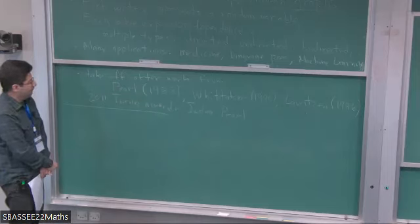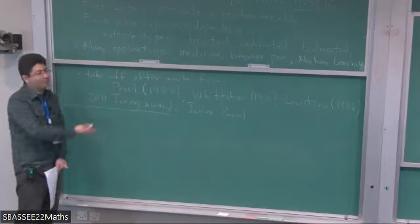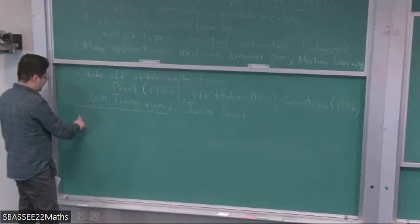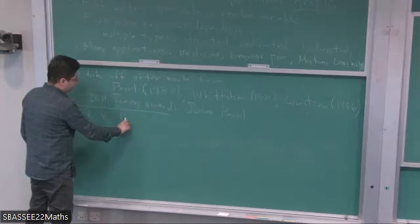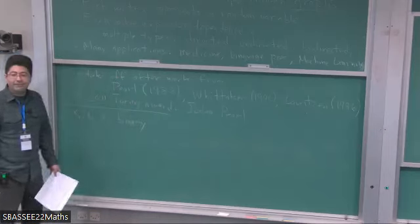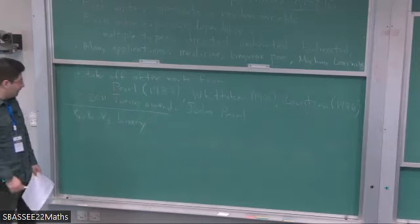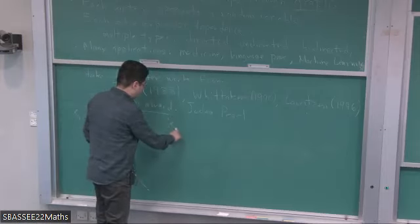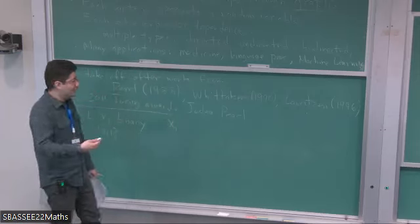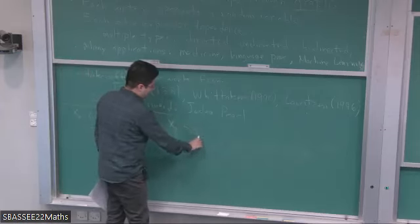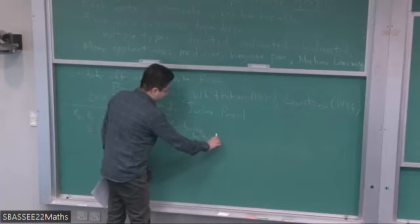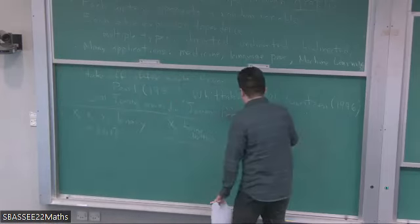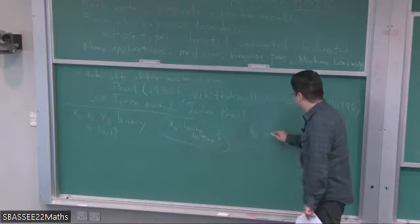Let me start with a nice example of such a graphical model. Let's say I have three random variables x1, x2, and x3 that are binary — they take values in 0 or 1. x1 is the question: is this a boring lecture? x2 is: is this an early morning lecture?